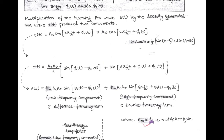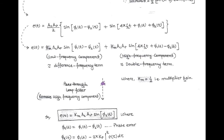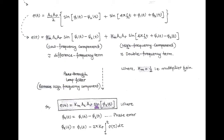Writing K_M in place of 1/2, the error signal has two terms. The first term, sin(φ1 − φ2), is the low frequency component as it represents the difference frequency. The second term, sin(4π·fc·t + φ1 + φ2), is the high frequency component with double the carrier frequency. Since the loop filter is low pass, the high frequency component is removed, leaving the low frequency error signal: ET = K_M·AC·A_V·sin(φ_E), where φ_E = φ1 − φ2.